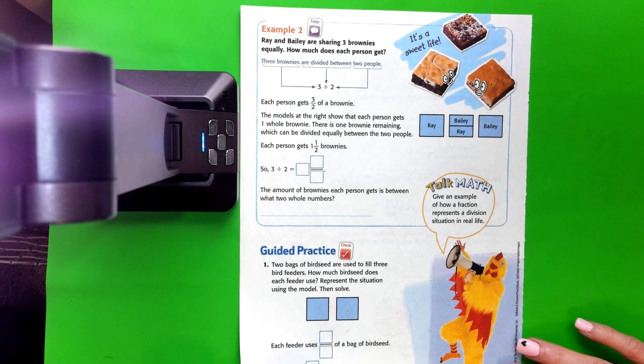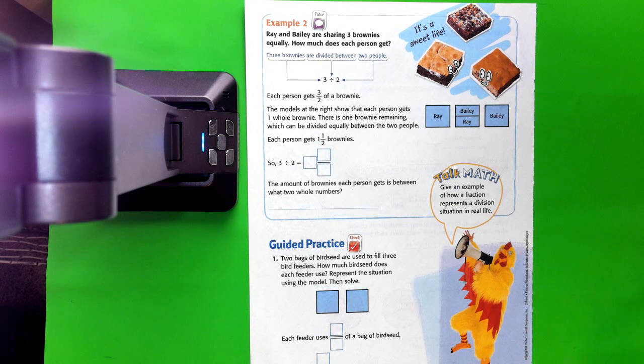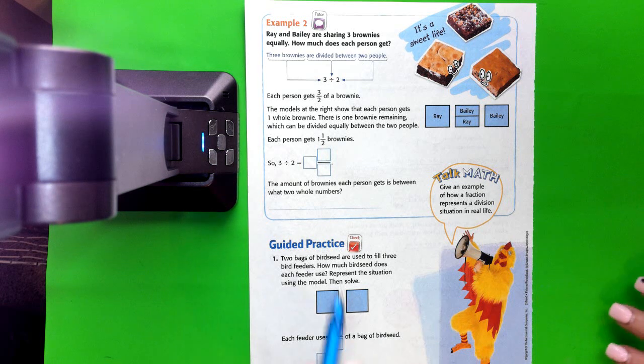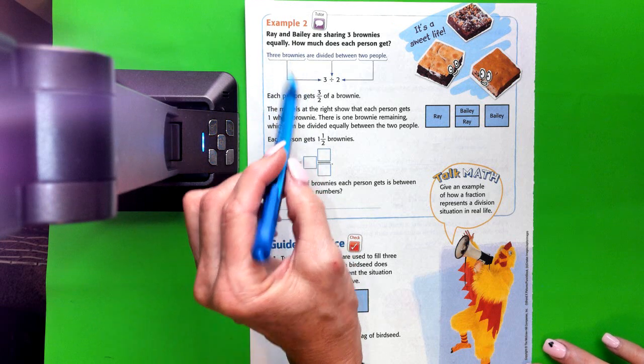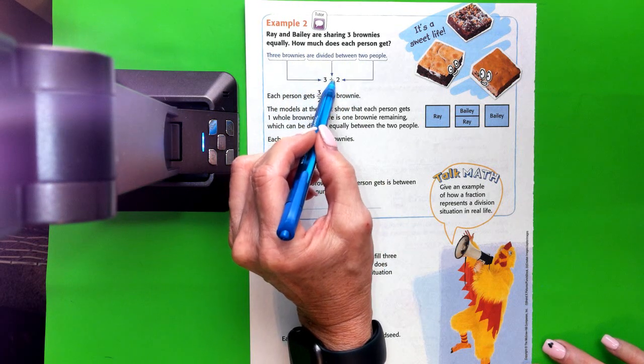Let's look at example 2. Ray and Bailey are sharing three brownies equally. How much does each person get? So we have three brownies divided between two people. That's 3 divided by 2.